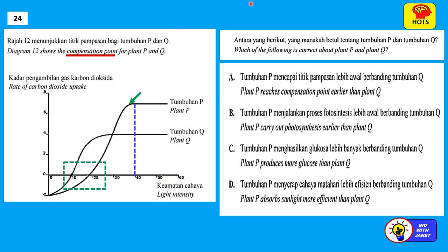Question 24: Diagram 12 shows the compensation point for plants P and Q — a graph of rate of carbon dioxide uptake against light intensity. There are two curves, plant P above and plant Q below. There are three zones: below the zero line where respiration rate exceeds photosynthesis rate and CO₂ is released; at the zero point where respiration equals photosynthesis and no net CO₂ exchange occurs; and above the zero line where photosynthesis rate exceeds respiration rate.